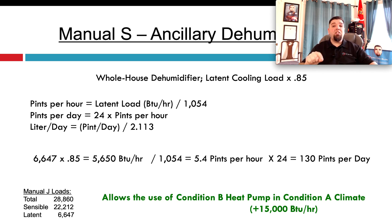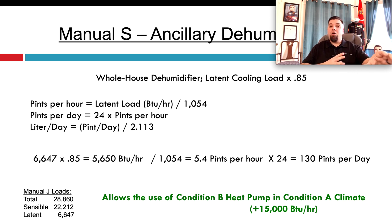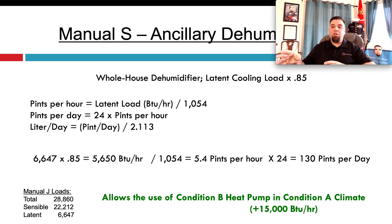With ancillary dehumidification installed, you are allowed anywhere in the United States to use Condition B for heat pump selection. So if you're in a warm climate and need to oversize the system to get the BTUs needed — which could be up to plus 15,000 BTUs over the total cooling gain — you can address the latent needs with a whole-house dehumidifier. That way, an oversized system in that application isn't a problem because the dehumidifier is removing the moisture.